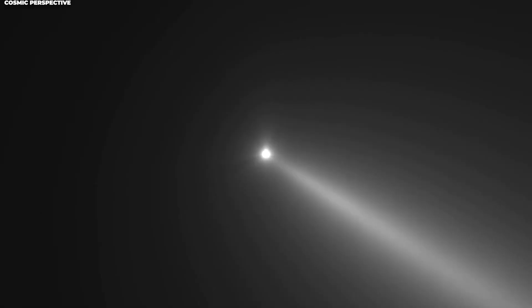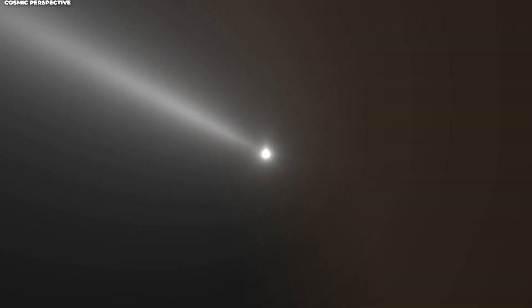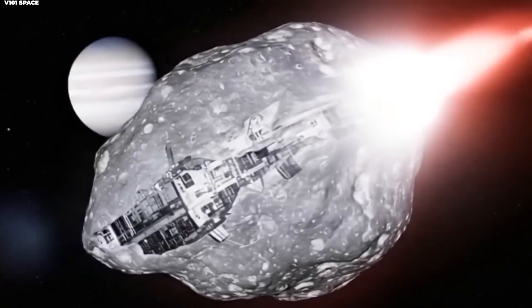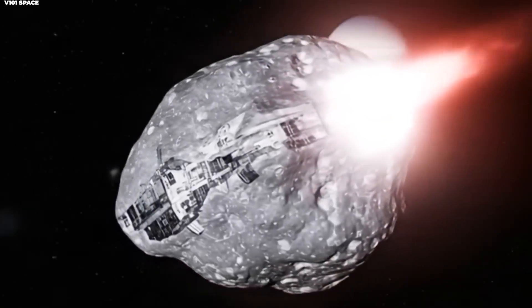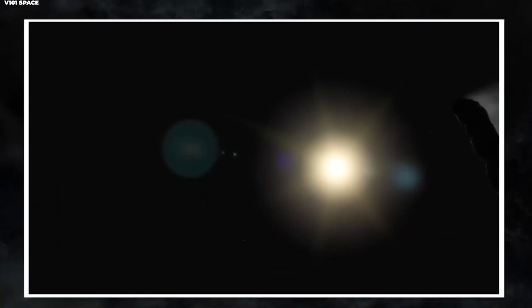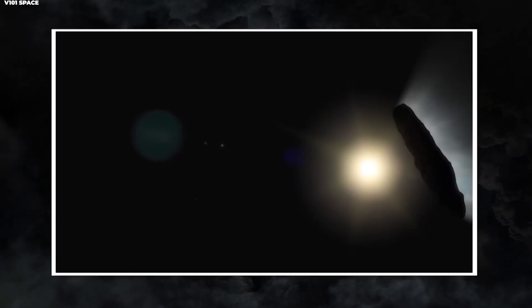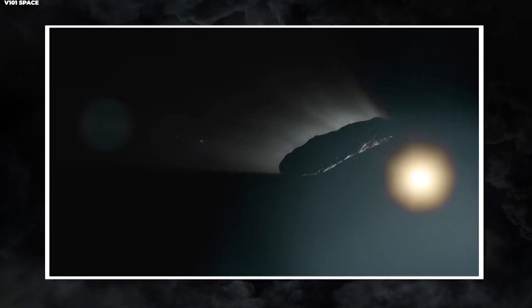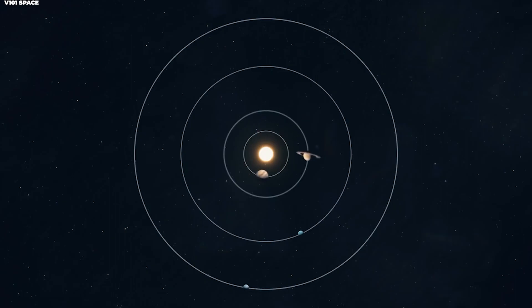The comet itself was relatively small compared to some of the famous comets we know. Initial observations suggested it was somewhere between 300 meters to possibly a kilometer in diameter. As it approached the sun, it began to develop the characteristic tail that makes comets so beautiful, as the sun's heat vaporized ice and released dust trapped within the comet's nucleus.